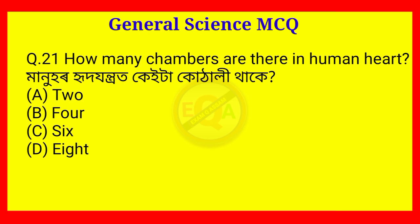Question number 21. How many chambers are there in the human heart? The answer is Option B — 4.